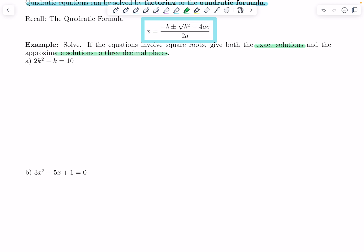It says solve. If the equations involve square roots, give both the exact solutions and the approximate solutions to three decimal places. So now they're being specific and they want exact plus punched into the calculator three decimal places we round. Here we go. We have 2k squared minus k equals 10. First things first, set it to 0. So I'm going to move the 10 over. So we've got 2k squared minus k minus 10 is 0.